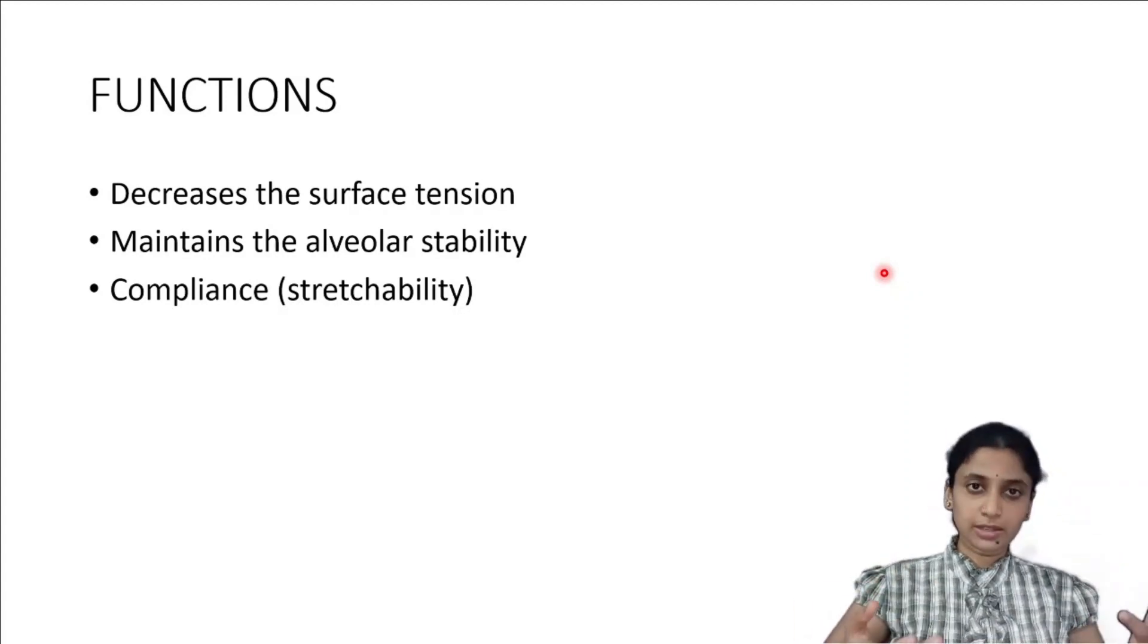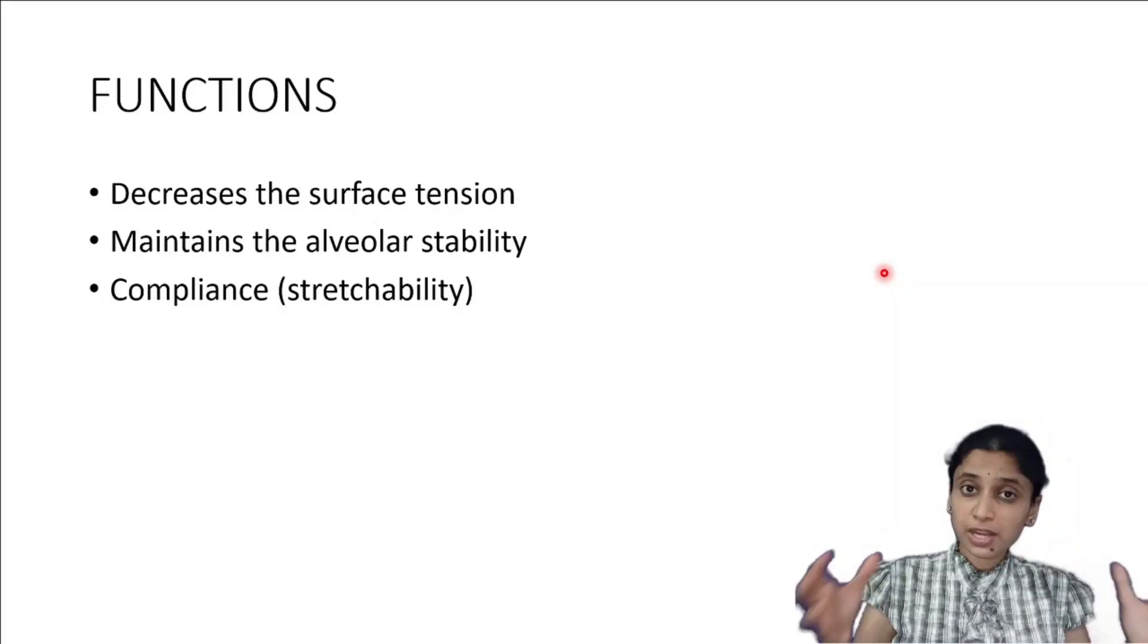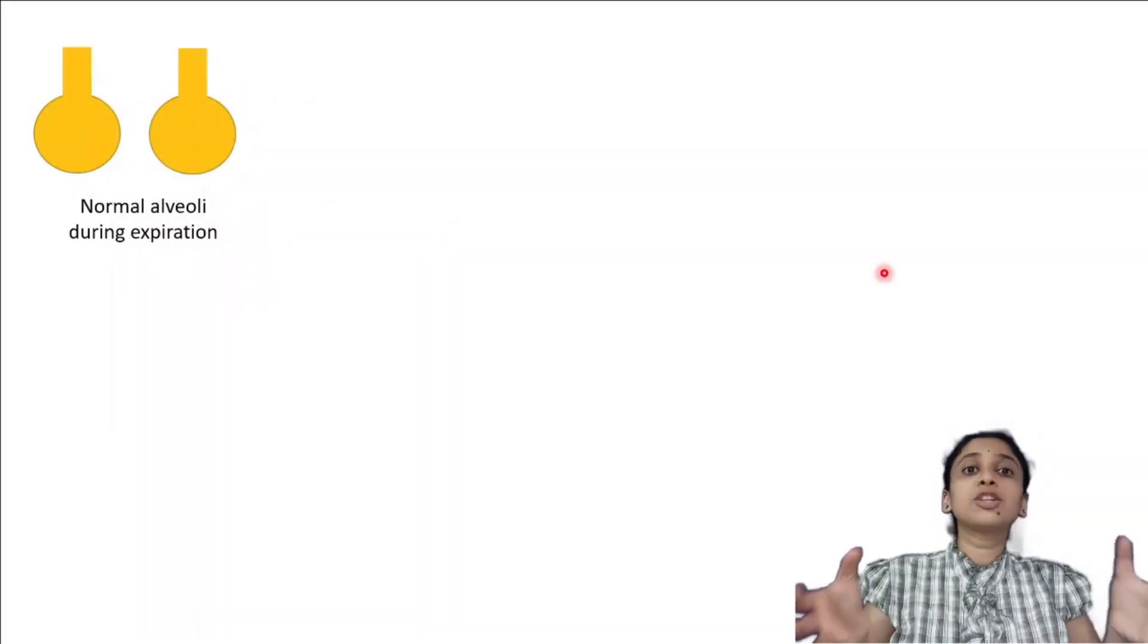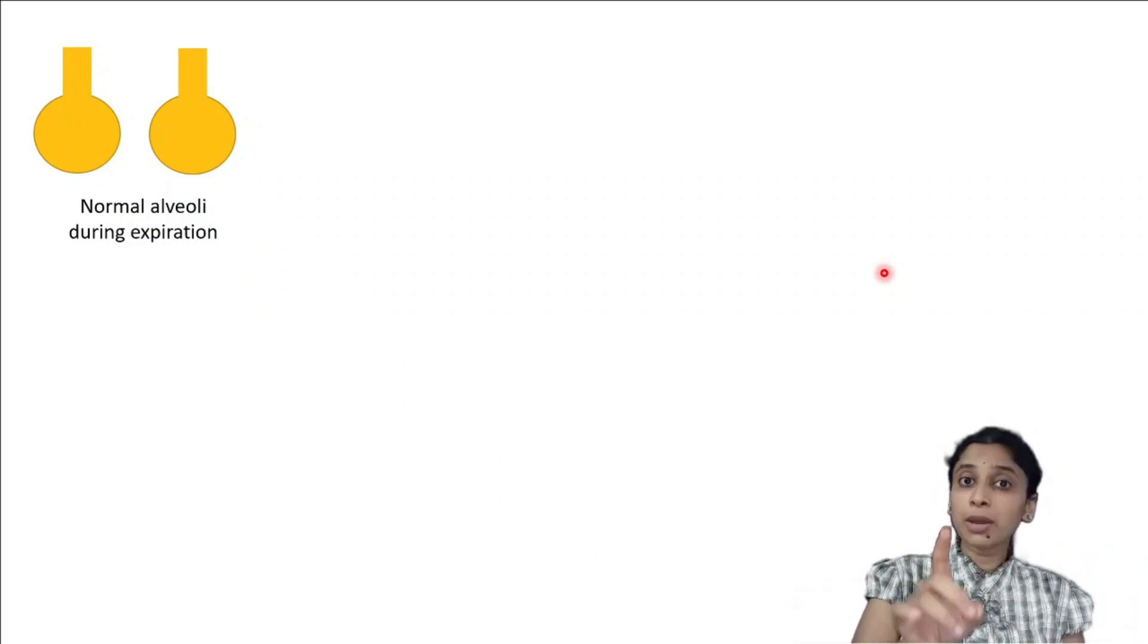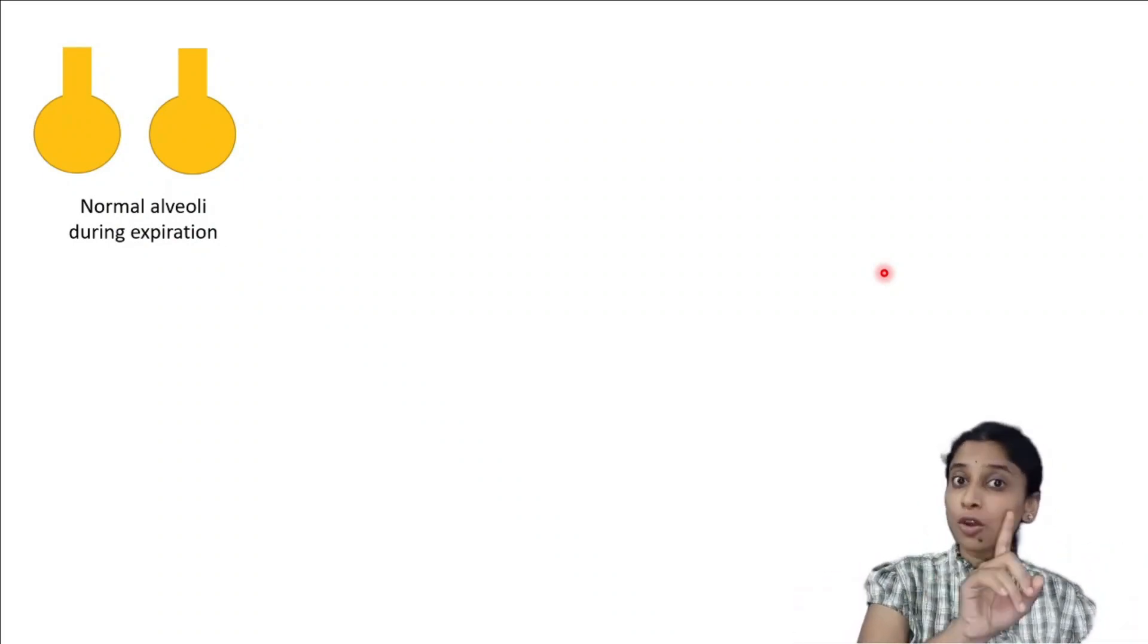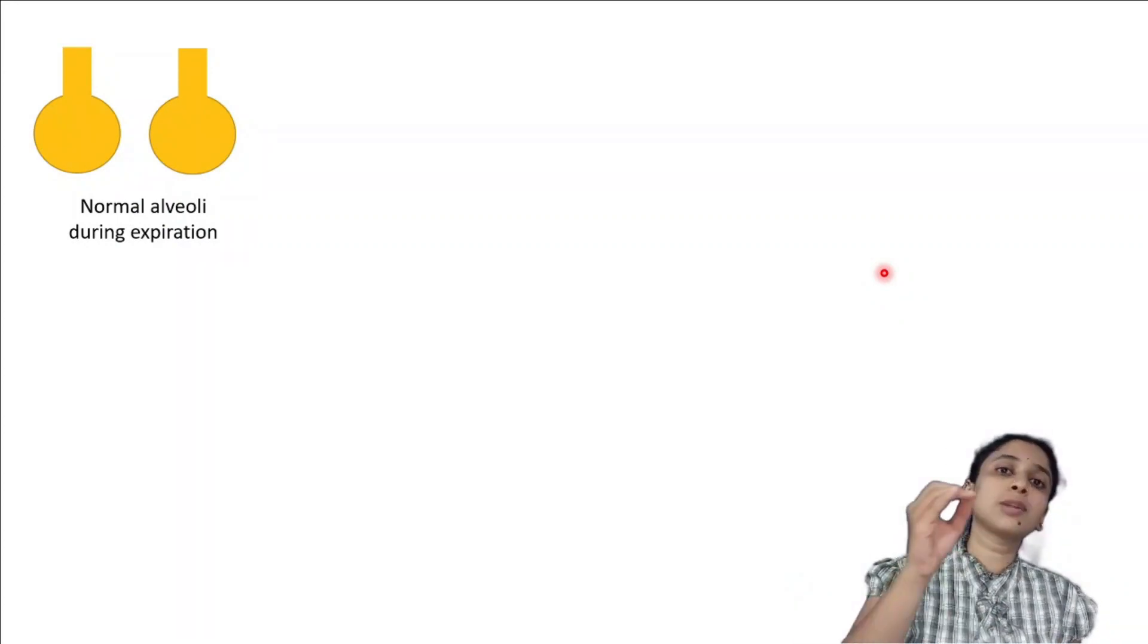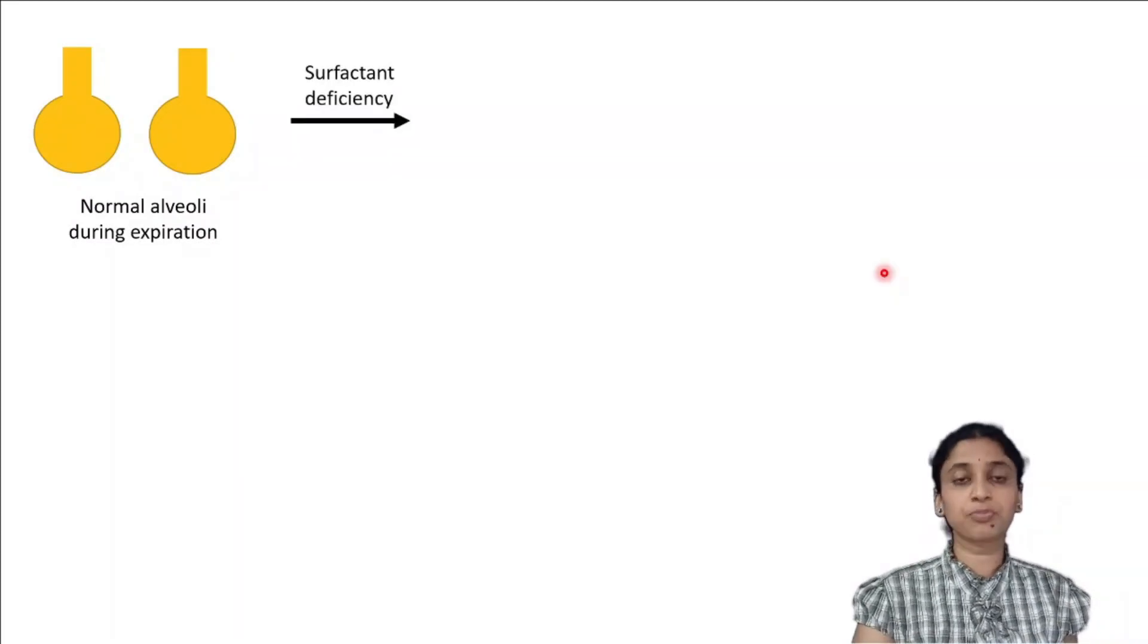Now I inspire, and whenever I inspire air, what happens to my lungs? They will expand. There will be expansion of the lungs, whereas when I expire there will be shrinkage of the lungs. But remember, it is just the shrinkage and not the collapse. The collapse is not happening because of the presence of surfactant. But what happens in prematurity? There will be surfactant deficiency.